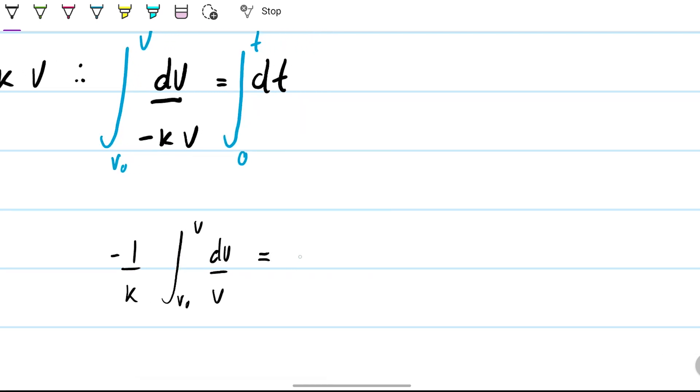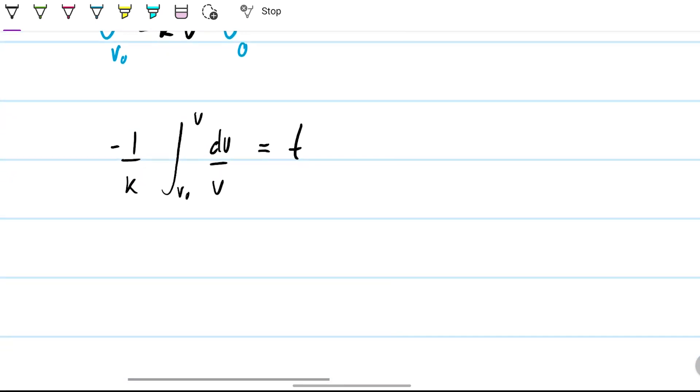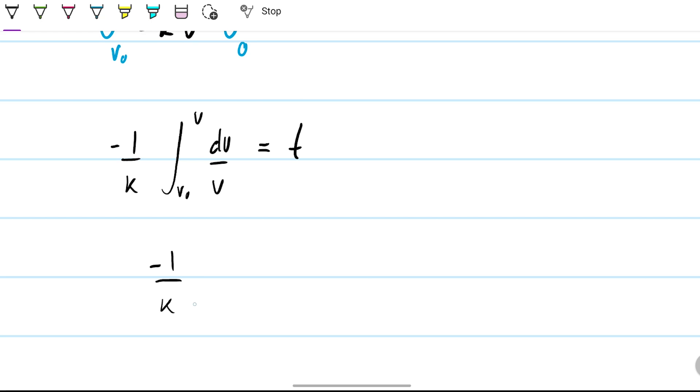Therefore -1/k times the natural log of v/v_0 will be equal to t. We know v_0 is 900, we know k is 2700, we're looking for t, but we don't know v.